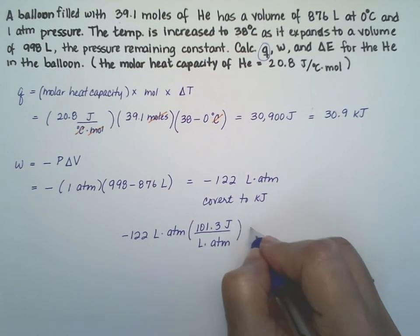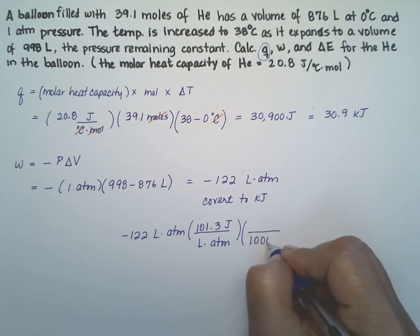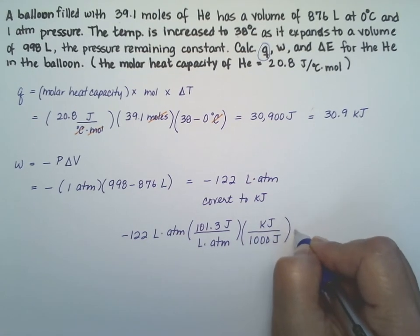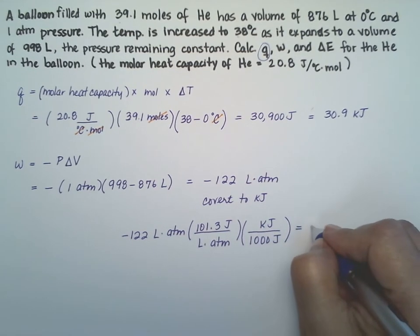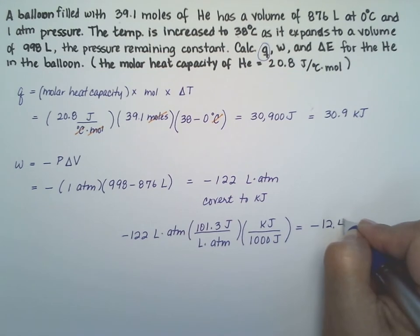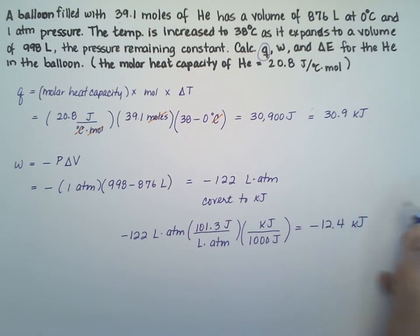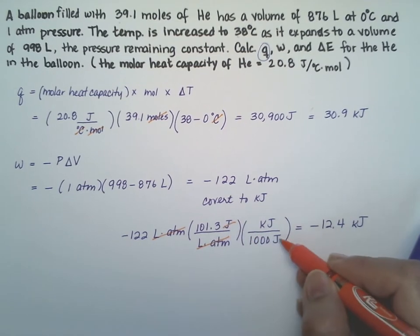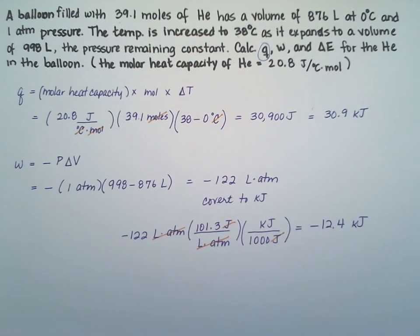We know that liters times atmospheres is going to equal 101.3 joules. So that gives, and let's go ahead and convert to the kilojoules. So that gives us minus 12.4 kilojoules. I like to cancel my units.